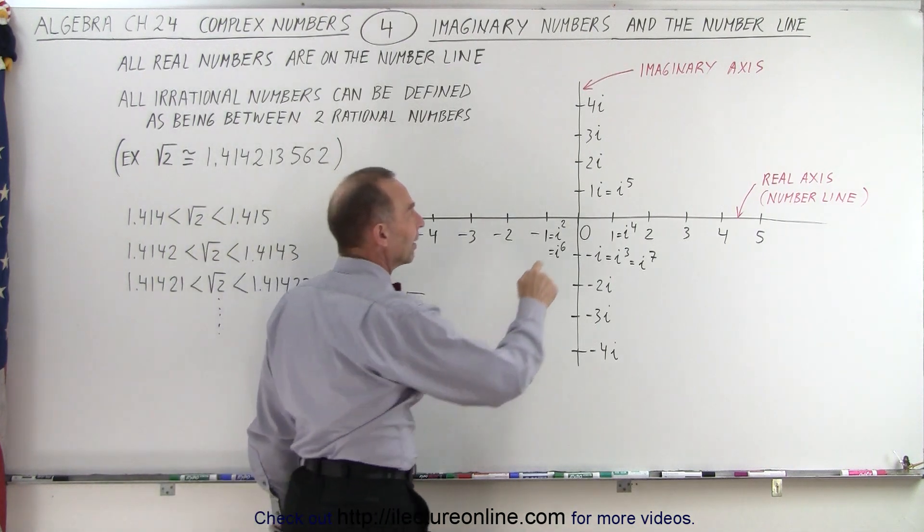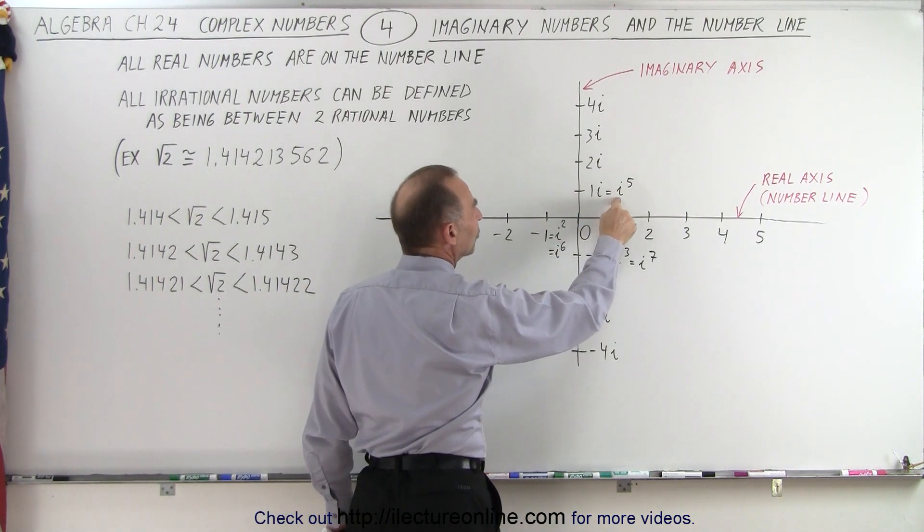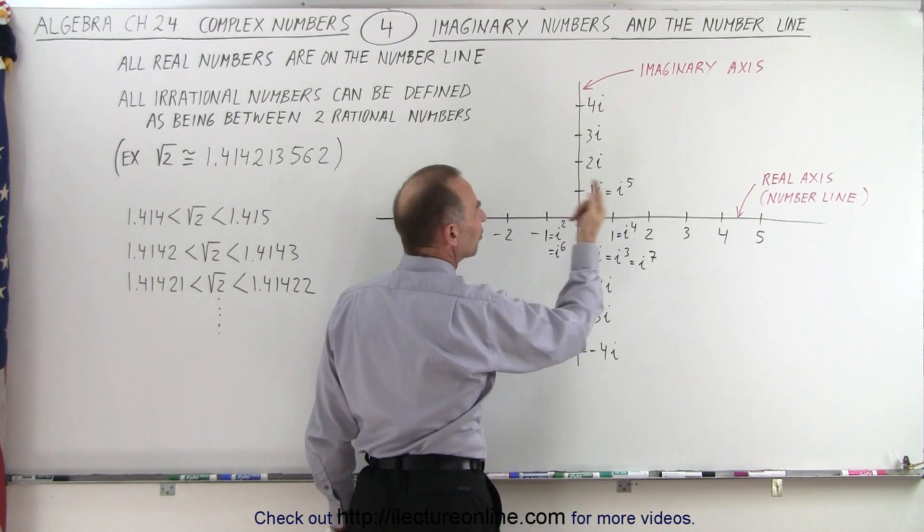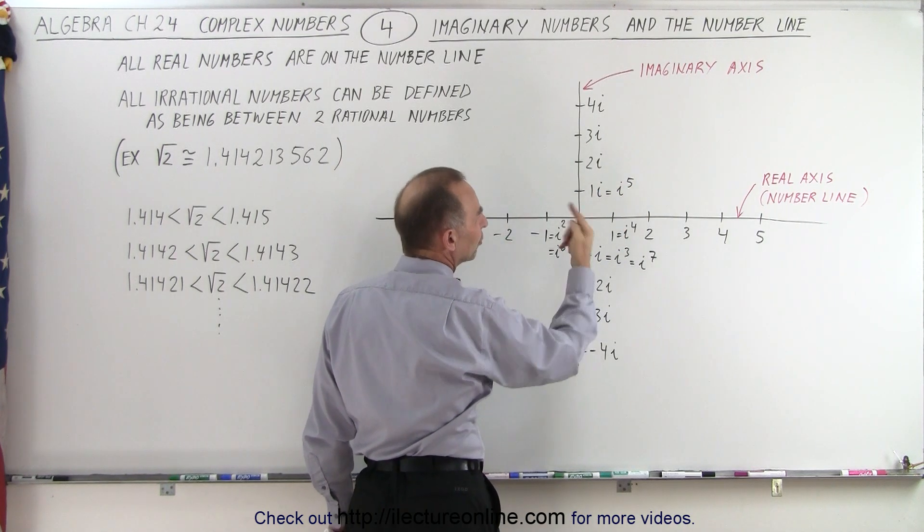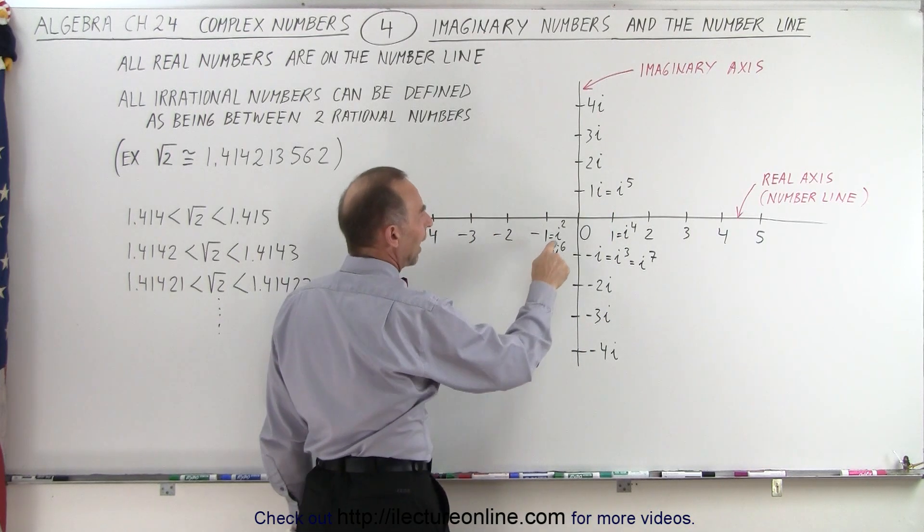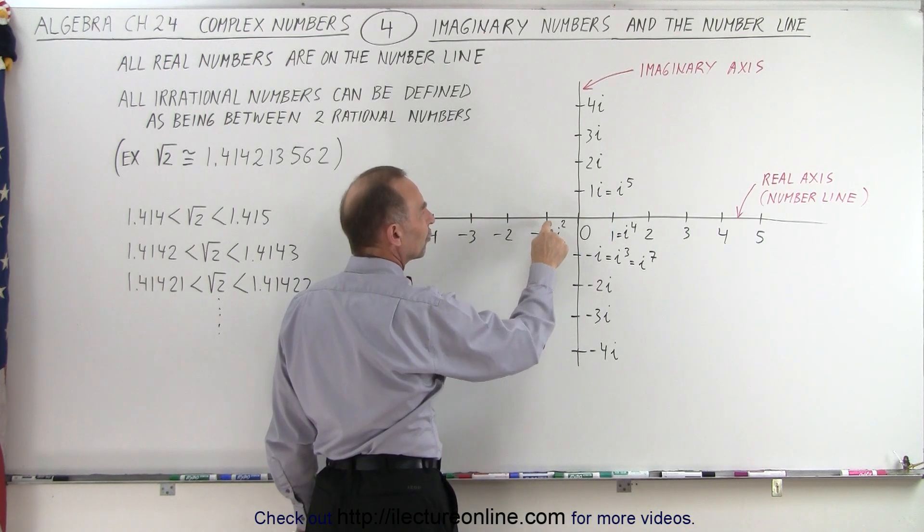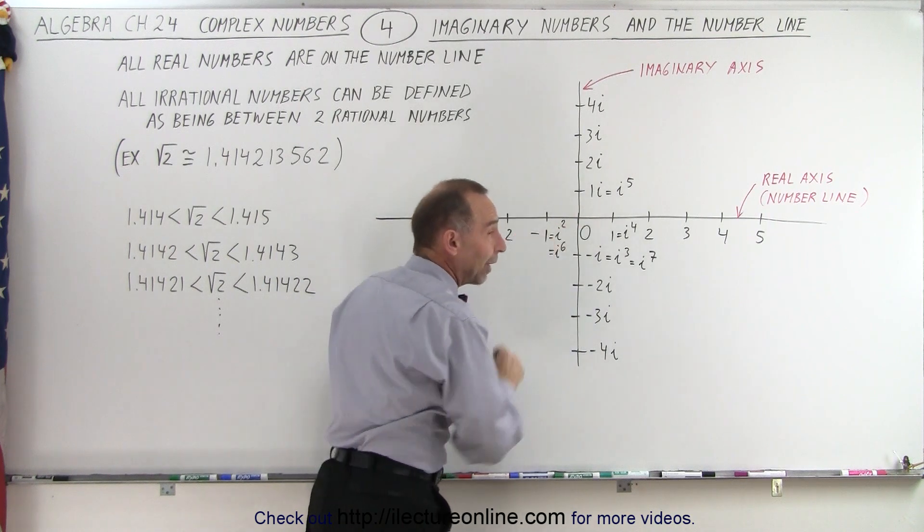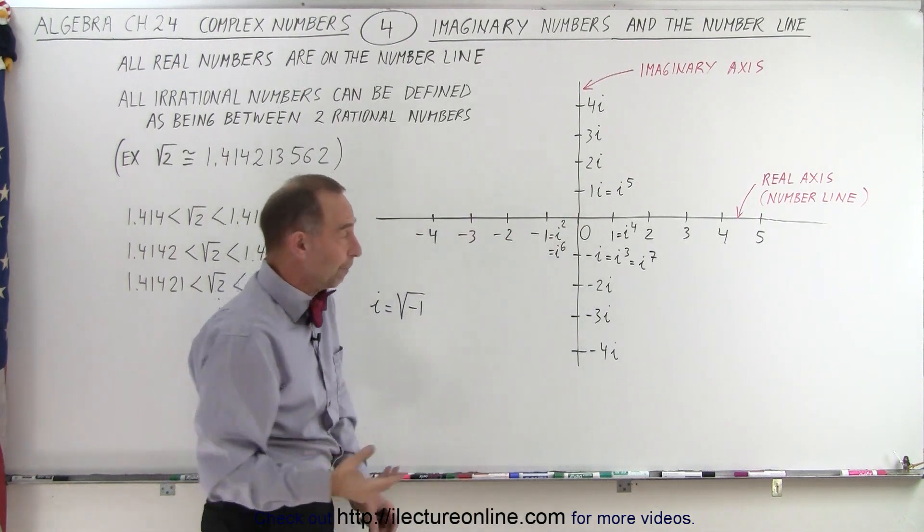And then we also realize that 1i is the same as i to the fifth. Because i to the fifth is i to the fourth, which is 1, times i, which is, well, that imaginary number. i squared is the same as negative 1. So i squared is actually on the real number axis because i squared is a real number.